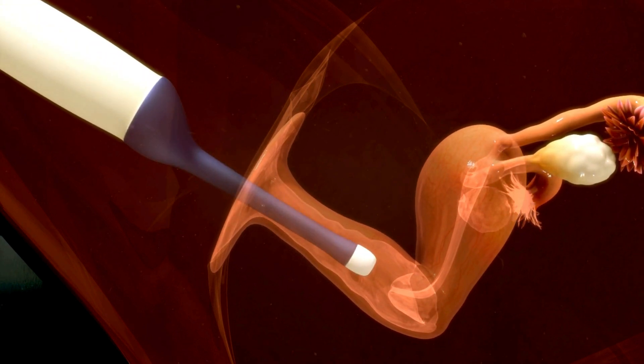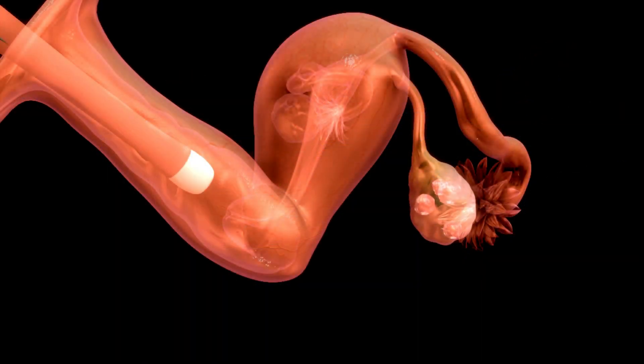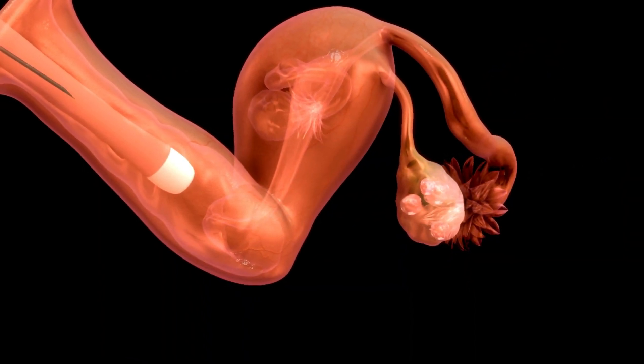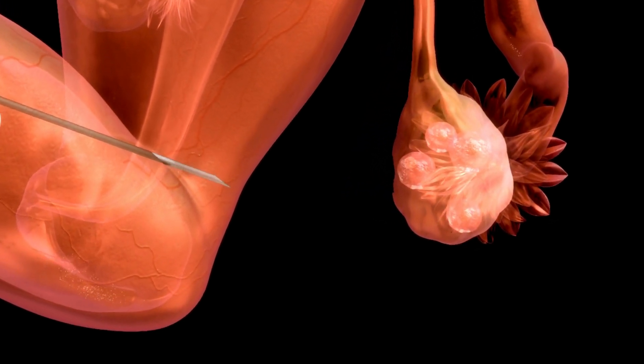The procedure involves puncturing the ovary with a needle, guided inside the follicles using ultrasound vision. The doctor will use an ultrasound to locate your ovaries then inserts a needle into an ovary, connecting it to a suction device and test tube.